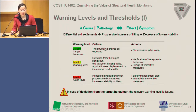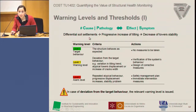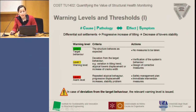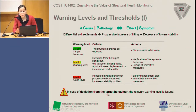The main cause triggering the cracking pattern and separation movement of the towers is the differential soil settlement beneath towers and facade. Since the progressive increase of tilting can lead, in a long-term perspective, to a decrease of tower stability, we decided to define warning levels according to certain criteria, so as to evaluate the current state of the structure and support future decisions on structural management. We define three levels, corresponding to actions in a general way, and in case of deviation from the target behavior, the relevant warning level is issued.